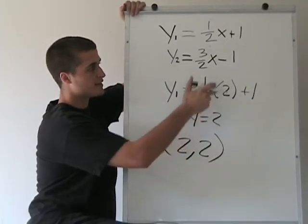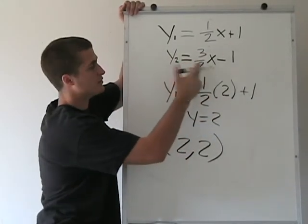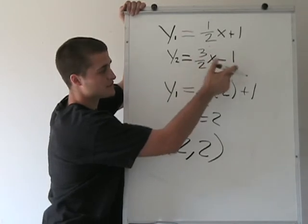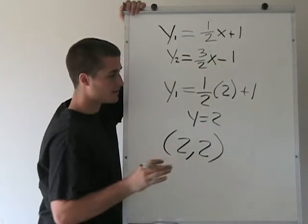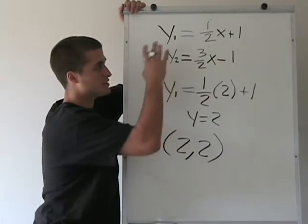And if we plug this 2 back into this one, we get 2 also. 3 halves times 2 is 3 minus 1 is 2. Because that's the point that both of these two functions have in common.